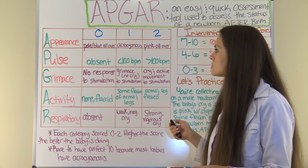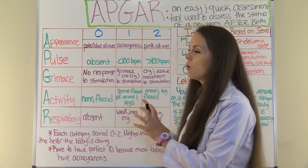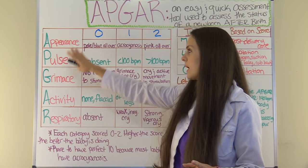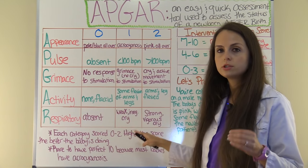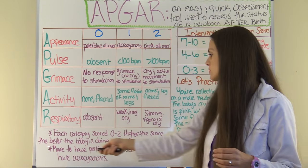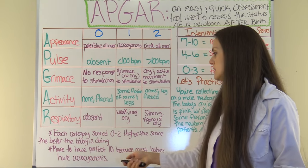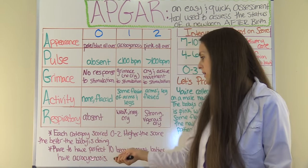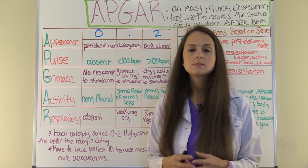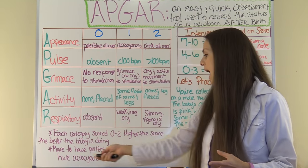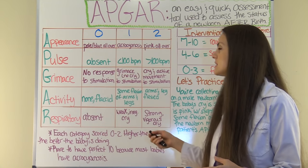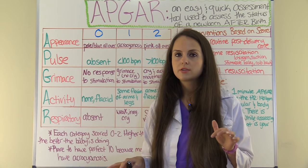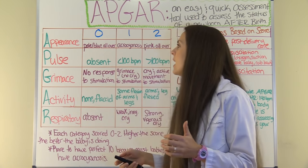Now let's look at the APGAR scoring in detail. Each category is scored from zero to two, and the higher the score, the better the baby is doing — so 10 is great. However, it is rare to get a perfect 10 because most babies have what's called acrocyanosis, where they have a pink body but may have some blue in their hands or feet.